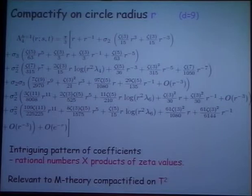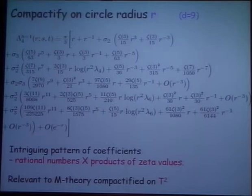We've also compactified on a circle and got a huge number of terms which now depend on the radius of the circle, with a very intriguing pattern of coefficients — once again products of zeta values times rational coefficients. Compactifying on a circle is of relevance to what I'm going to say because I'm going to now go on to talk about M-theory compactified on a torus, which is supposed to be equivalent to this.